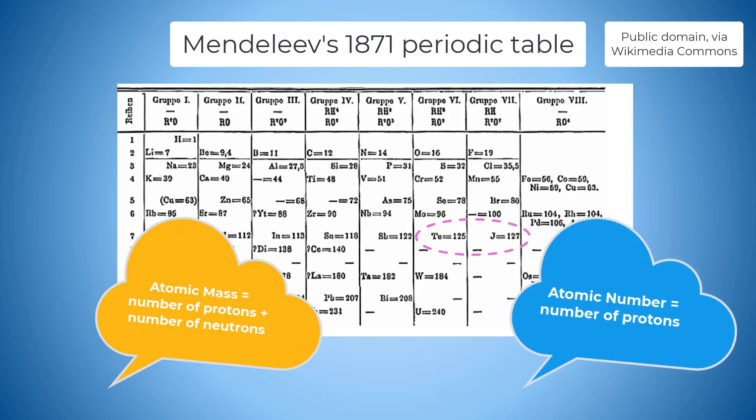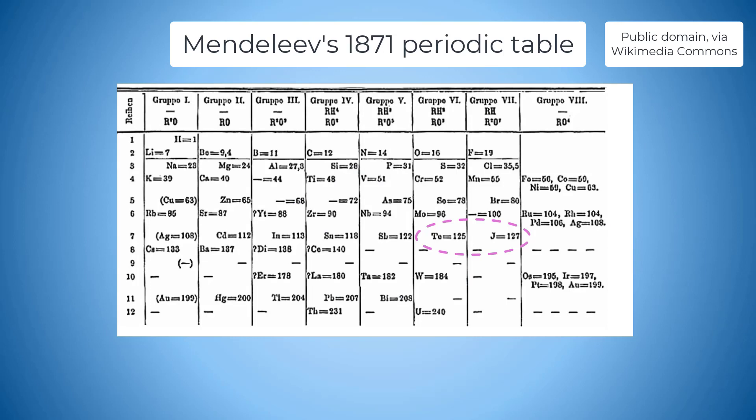What really made this arrangement special was that Mendeleev left gaps for undiscovered elements. He even predicted the properties of some of these elements which when they were discovered matched his predictions incredibly closely and showed his predictions to be incredibly accurate. It's these elements we're going to be focusing on today.